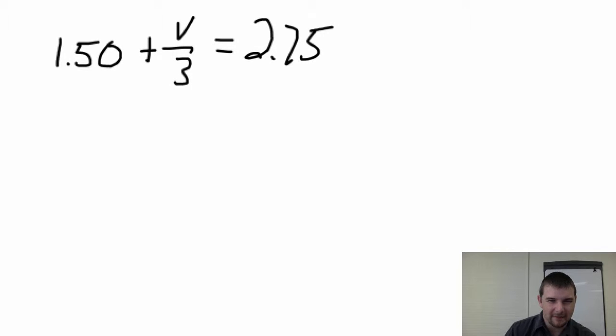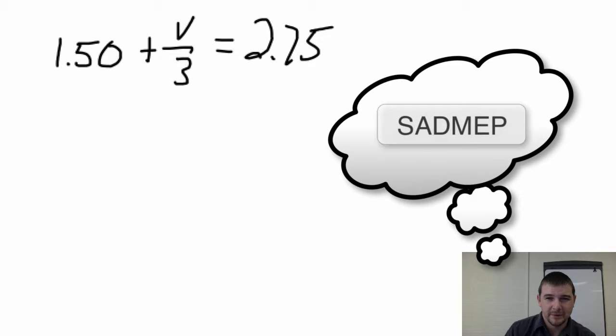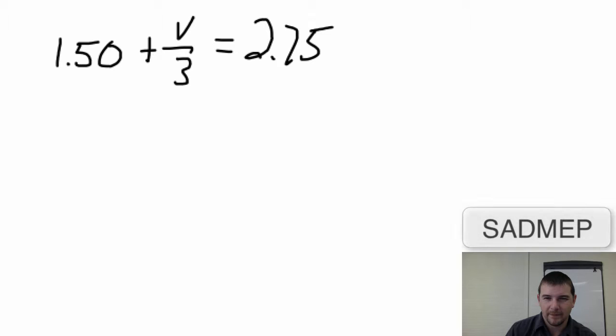We need to get v by itself. We can think of a teeter-totter, we can think of a balance, we can think of several apps that we use to isolate variables. Or we can think of SADMEP. So we need to undo the order of operations. SADMEP. We have two things to do. This is going to be a two-step equation. We need to deal with this $1.50 and with this divided by 3. The question is which to do first. SADMEP will help with that.